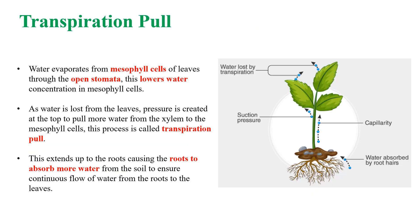Now let us see what is transpiration pull. Due to transpiration, water concentration in mesophyll cells present in leaves is decreased. As a result, pressure is created at the top to pull more water from the xylem to the mesophyll cells. This process is called transpiration pull. Transpiration pull also causes the roots to absorb more water from the soil to ensure continuous flow of water from the roots to the leaves.